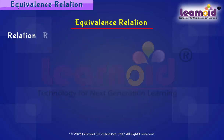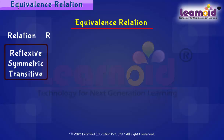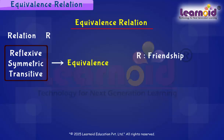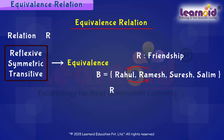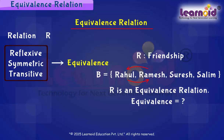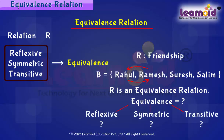If a relation R is reflexive, symmetric, and transitive, then the relation R in the set A is said to be an equivalence relation. In the set of four boys, the relation friendship is an equivalence relation because it is reflexive, symmetric, and transitive. To check an equivalence relation, verify the relation for all three properties: reflexive, symmetric, and transitive.